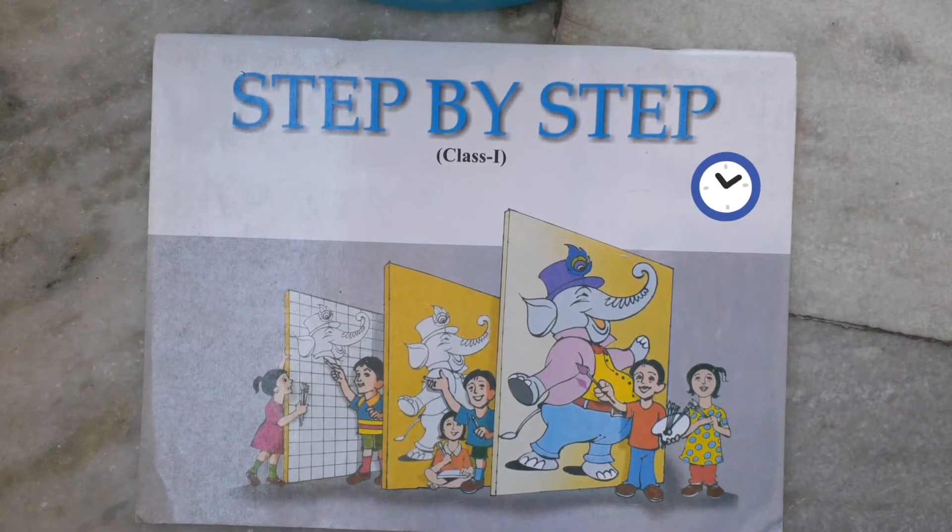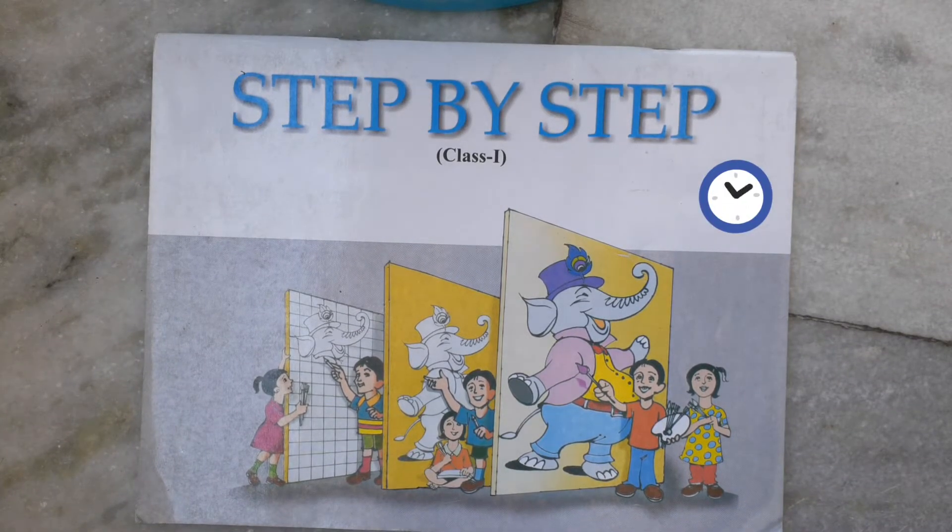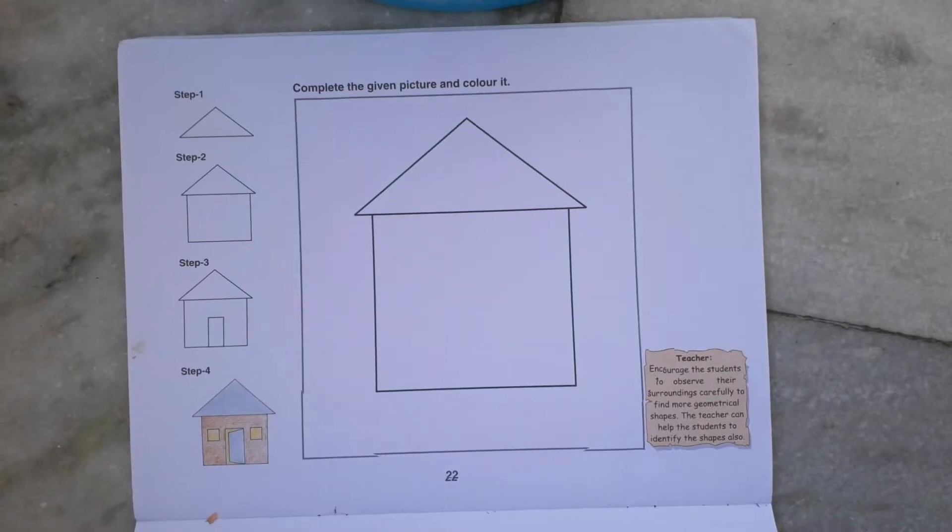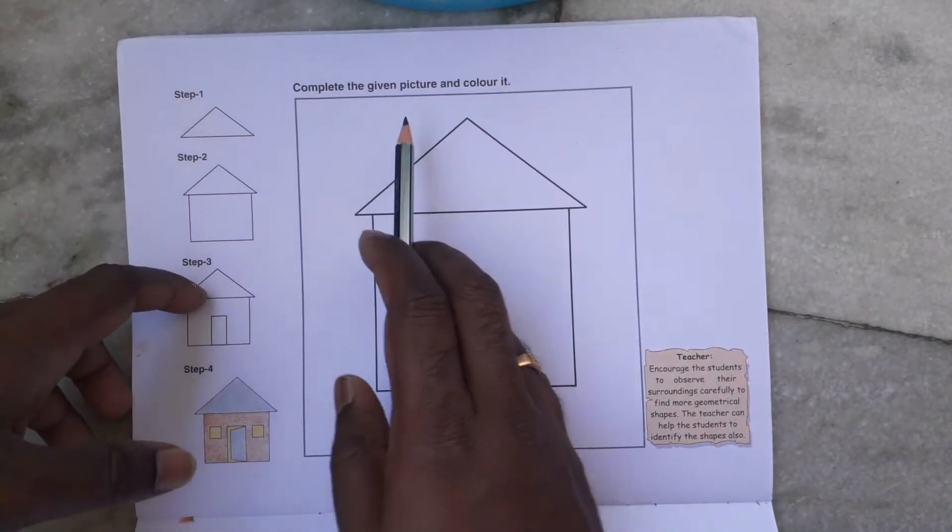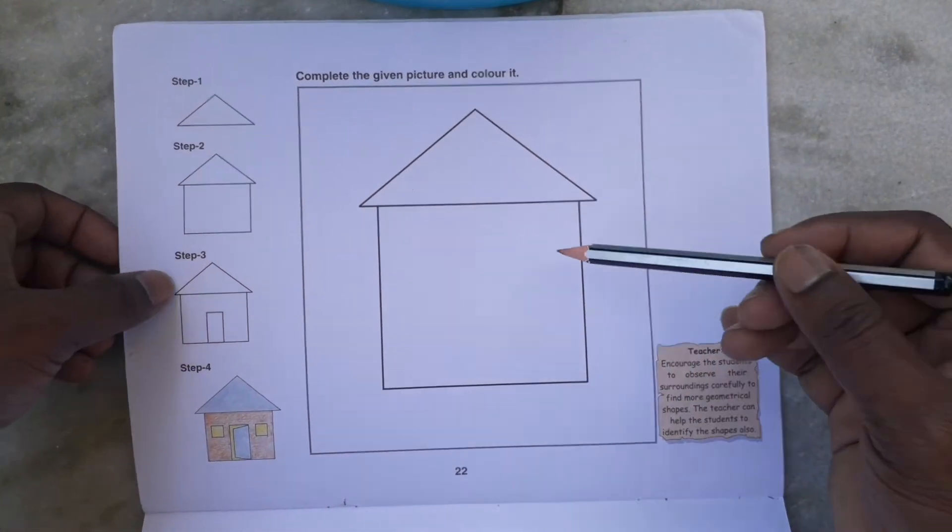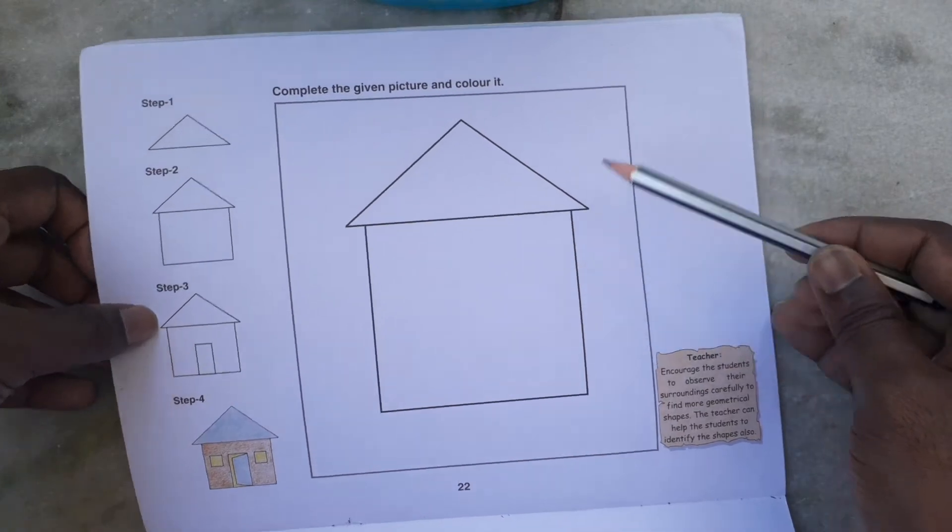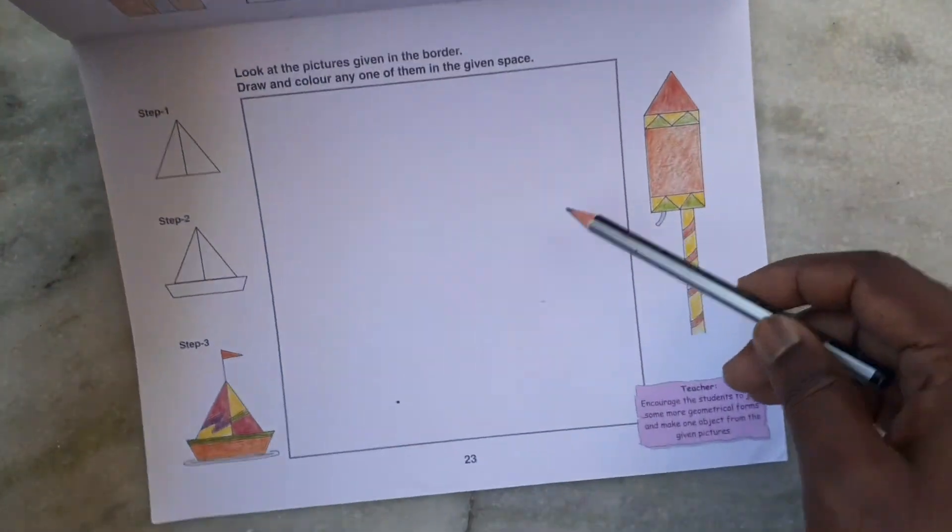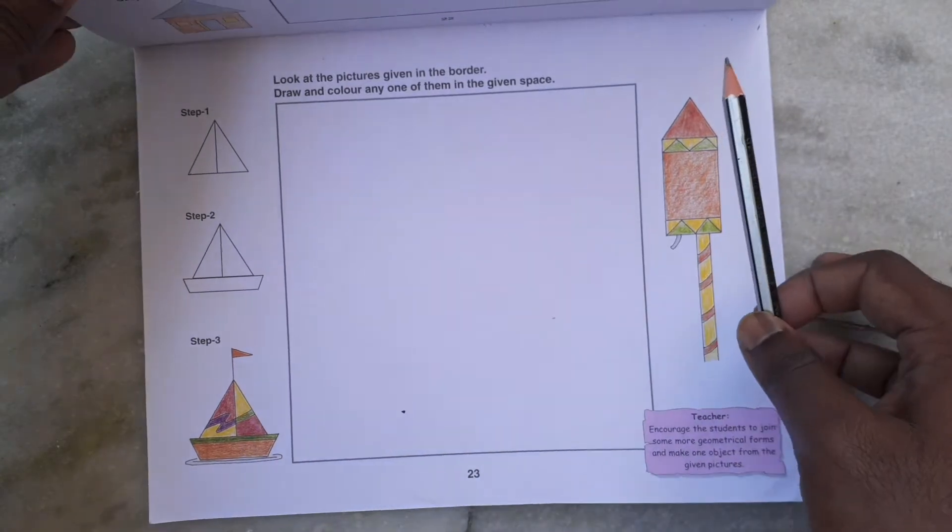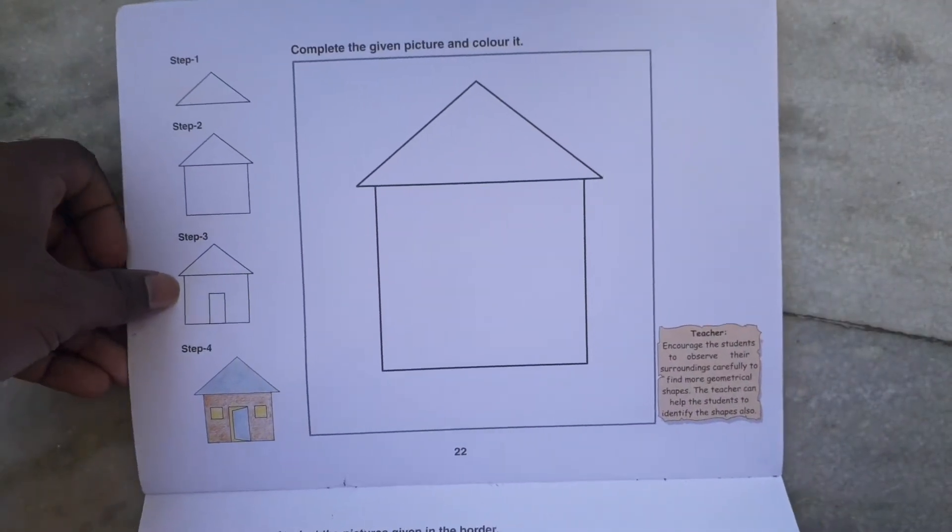Hello students, welcome back to our art class. Today we will do page number 22 and 23. Complete the given picture and color it. This is a geometrical shape, and page number 23 also has geometrical shapes. Let's start the drawing.